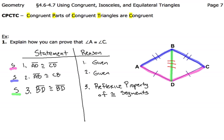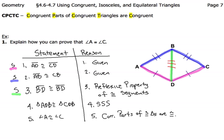Now that we've got all three sides of one triangle congruent to the corresponding sides of the other triangle, we can say that the two triangles are congruent by the Side-Side-Side congruence postulate. For our last step, we show that angles A and C are congruent because they're corresponding parts of congruent triangles. Depending on your teacher, you may be allowed to just write CPCTC, but on many standardized tests you'll need to write out the full phrase.